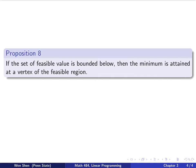We now have Proposition 8. It says: if the set of feasible values is bounded below, then the minimum is attained at a vertex of the feasible region. The proof of this proposition is not really hard — I am going to leave this as a homework. Give it a try. I hope you enjoyed this video. See you next time.